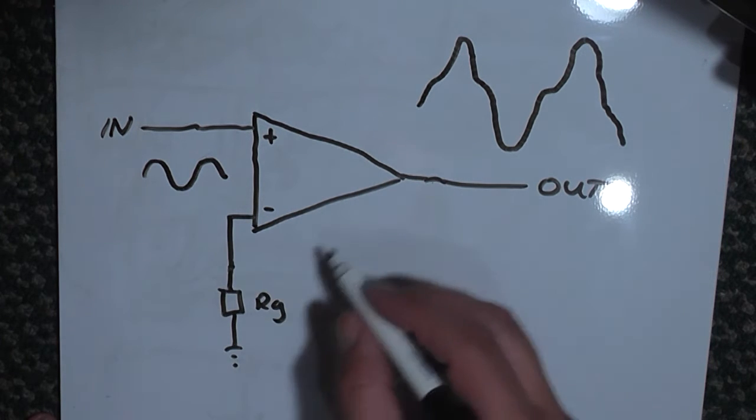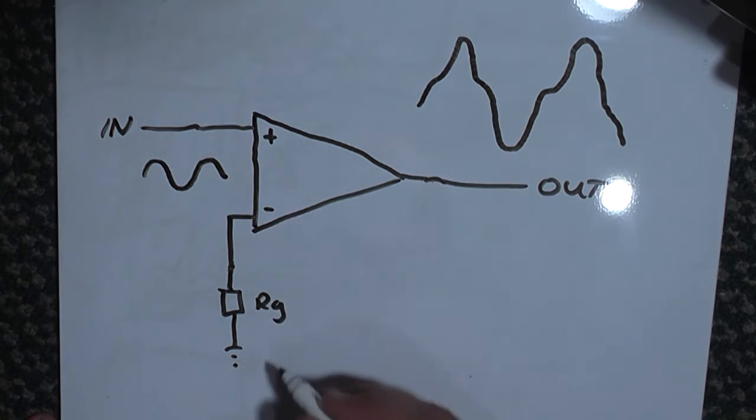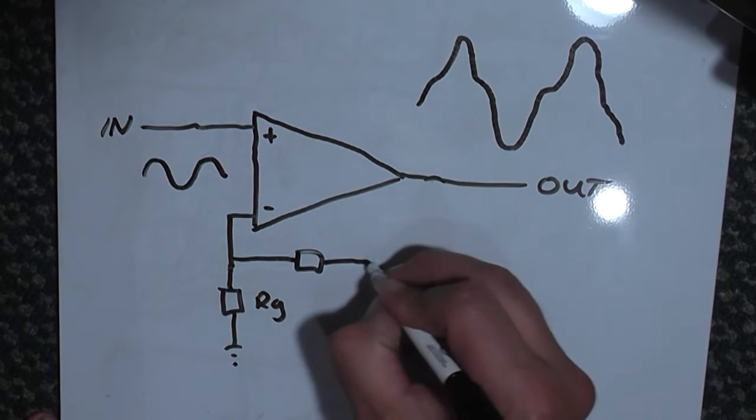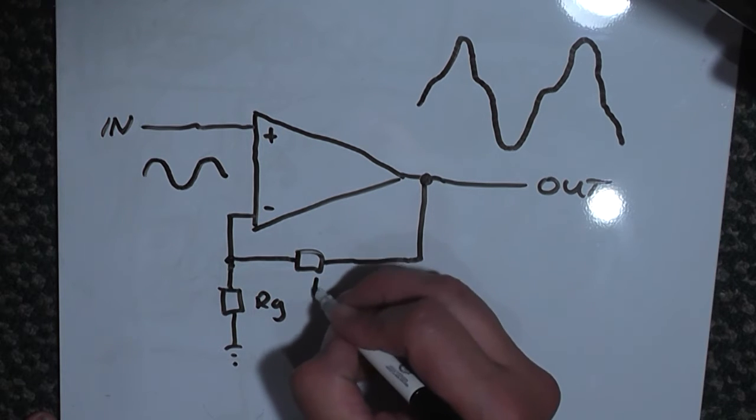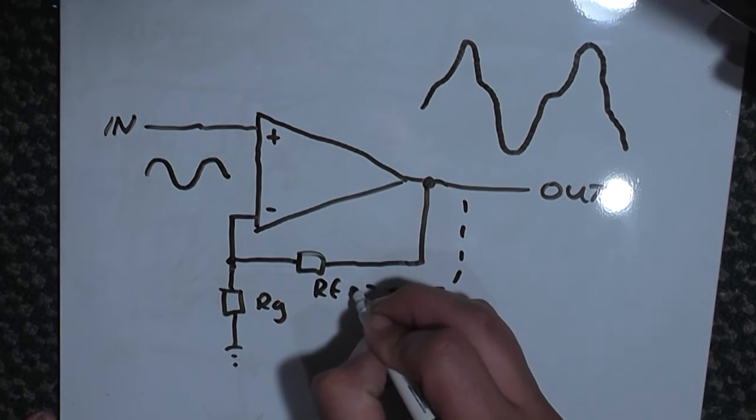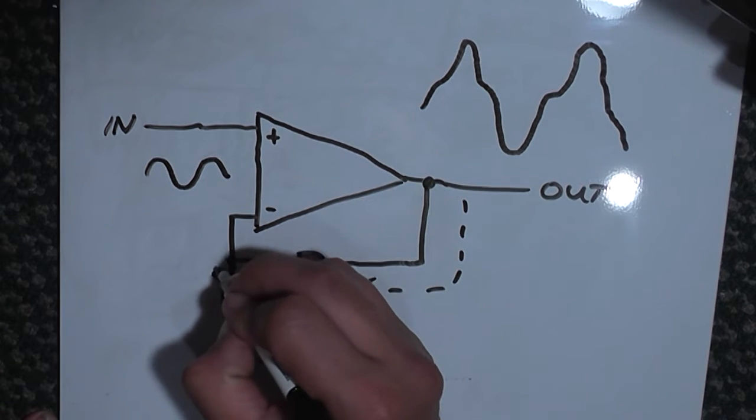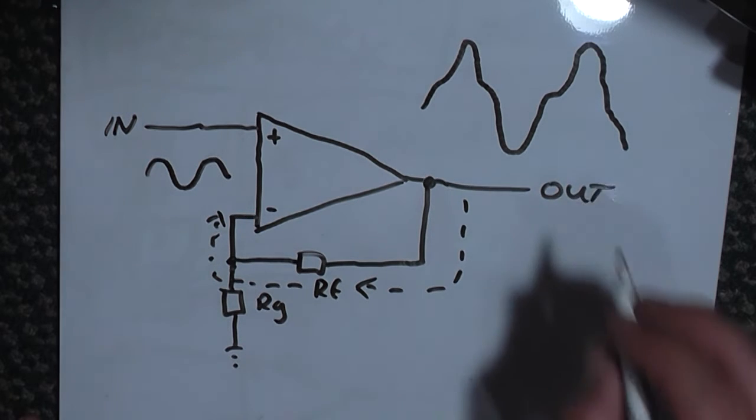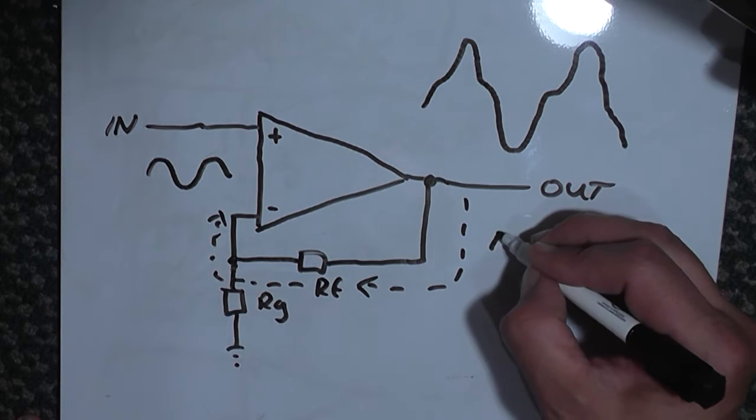Negative feedback is achieved by applying, through a resistor here called RF, part of the output signal back to our input signal to basically cancel out the distortion.